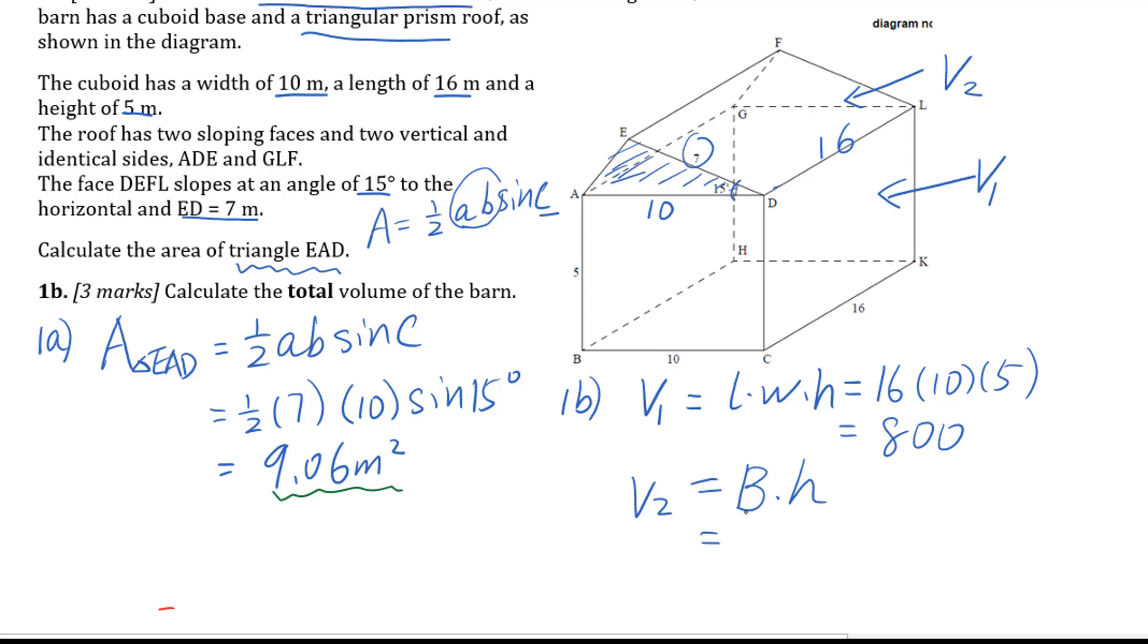Therefore, for base area AED, you could see it's here 9.06. So we have 9.06 times 16, we got 144.96. So for the total volume, we add these two together. 800 plus 144.96. Your answer is 944.96 meters cubed.